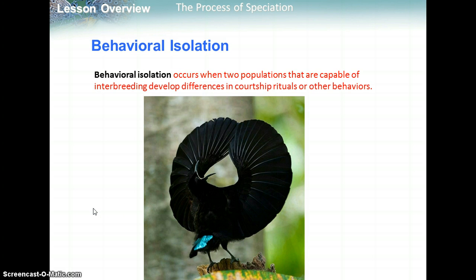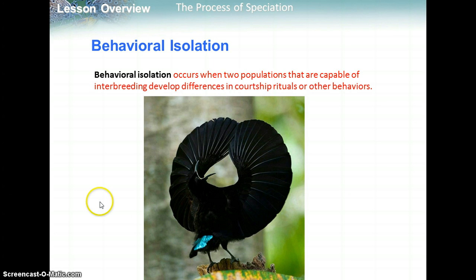Behavioral isolation occurs when two populations that are capable of interbreeding develop differences in courtship rituals or other behaviors where they don't even recognize what that population is doing. For example, a bird does one dance, but then behavioral isolation happens where one set of the population doesn't recognize this dance anymore. So they don't breed, and over time they would become isolated and become new species.